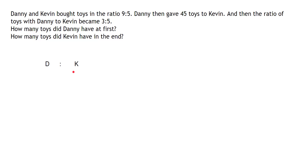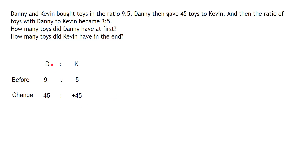Let's first use the model method and write down the ratio of Danny to Kevin. Before any exchange, the ratio of Danny to Kevin was 9 to 5. The change is that Danny is losing 45, so minus 45, and Kevin is gaining 45, so plus 45. After the exchange, the ratio is 3 to 5. We are just noting this information down.